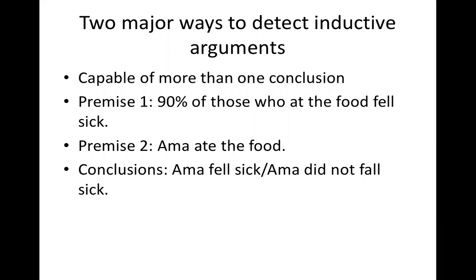In order to show the limitation of evidence, let's look at two kinds of inductive arguments. But before we get there, let's look at two major ways to detect inductive arguments. First, an inductive argument is capable of more than one conclusion. For example: '90% of those who ate the food fell sick, Ama ate the food' — so the possible conclusions are: Ama fell sick, or Ama did not fall sick. That's the first way to know an inductive argument.